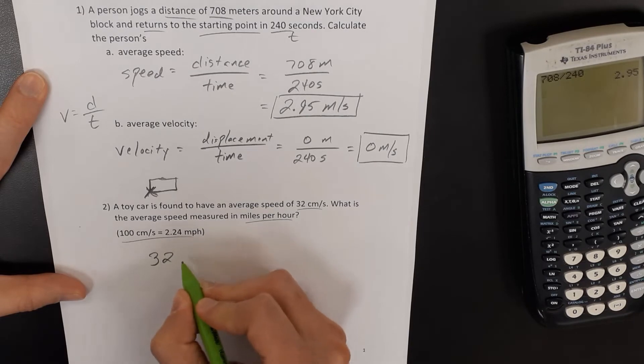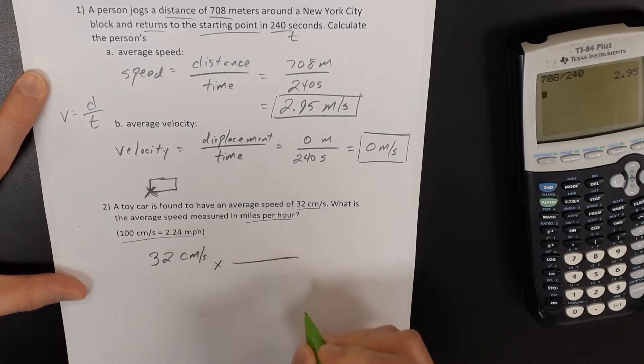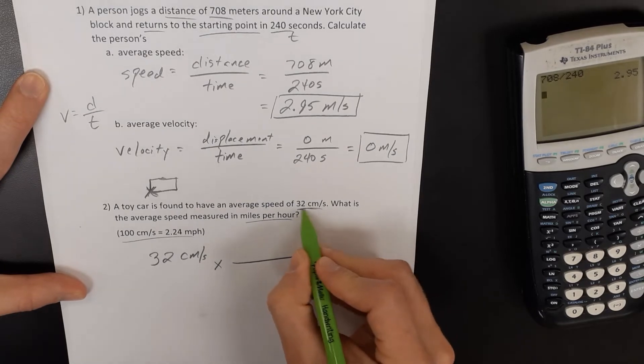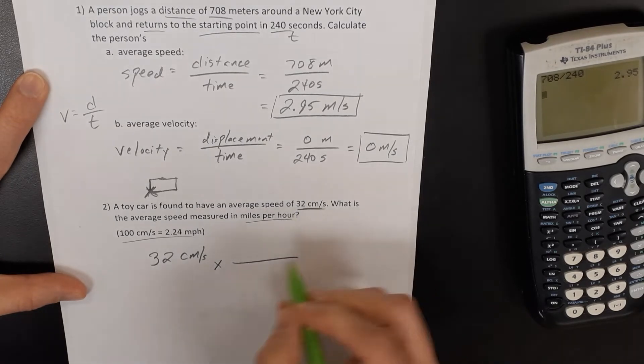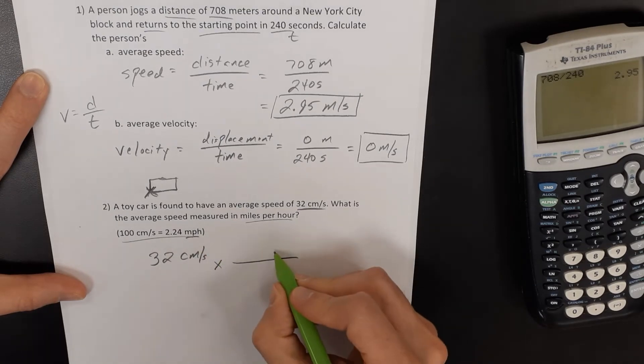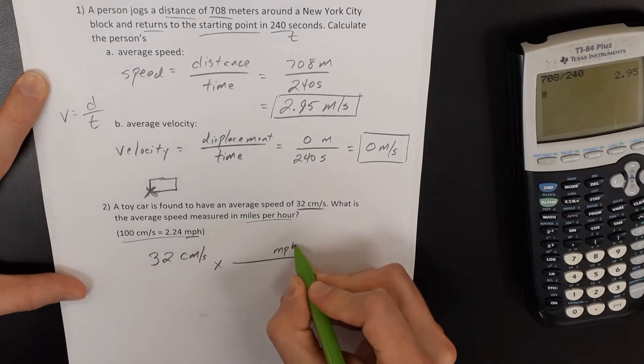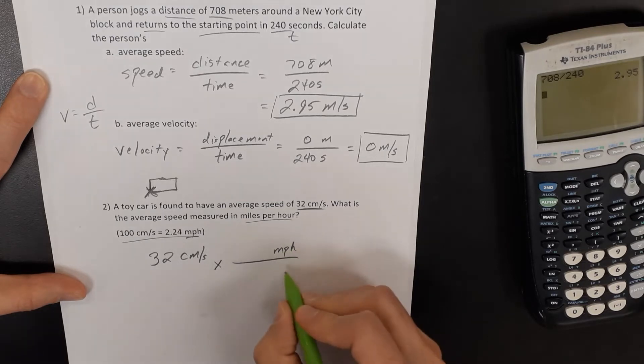So in doing this conversion, like you will need to do during your lab experiment, you're going to have your average speed here. Well, we want to convert these centimeters per second into miles per hour. So miles per hour needs to be on the top of my conversion factor. Centimeters per second needs to be on the bottom so that they're going to cancel out.